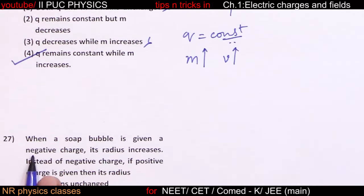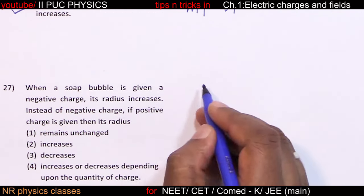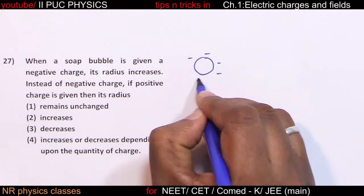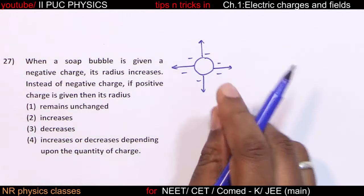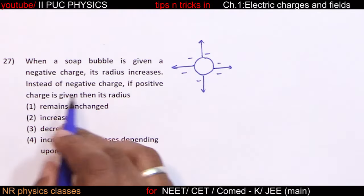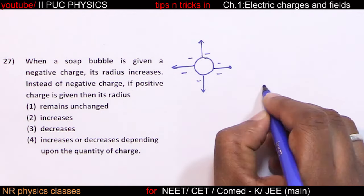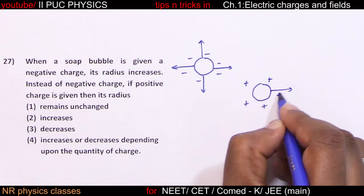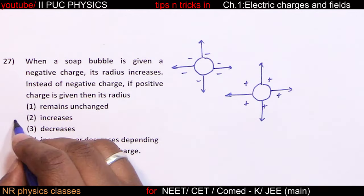When a soap bubble is given a negative charge, because of repulsion between like charges, the radius increases. Similarly, if a positive charge is given, there is again repulsion between charges, so the radius also increases.